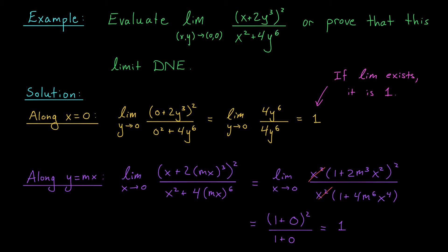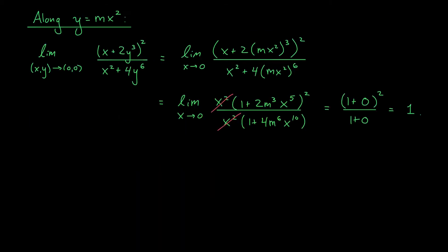This may suggest that the limit exists and is equal to 1. Again, it's not a proof, but it may be good evidence. I'm going to go ahead and check more paths — parabolas through the origin as well. We can consider a whole class of parabolas y equals mx² at once. When we replace y with mx², we get a lot of x's, factor them out, cancel, and evaluate through substitution. Again, along every one of these curves, we get a limit of 1.